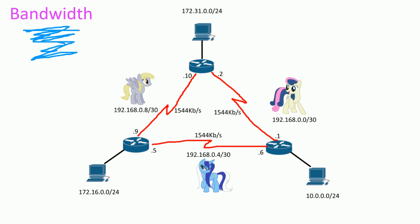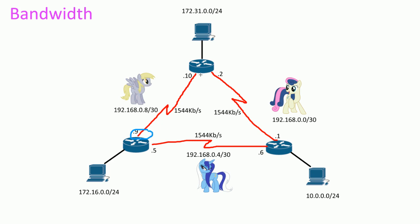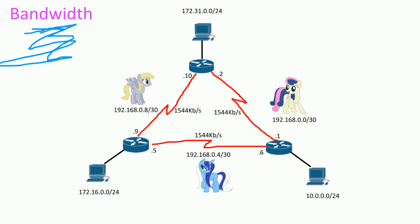Is the bandwidth really the bandwidth? On Cisco routers you can set the bandwidth on an interface — you can set this to 1000 kilobits, 10,000, or even one kilobit. But with Cisco routers, the bandwidth command doesn't actually change the bandwidth, which seems counterintuitive.